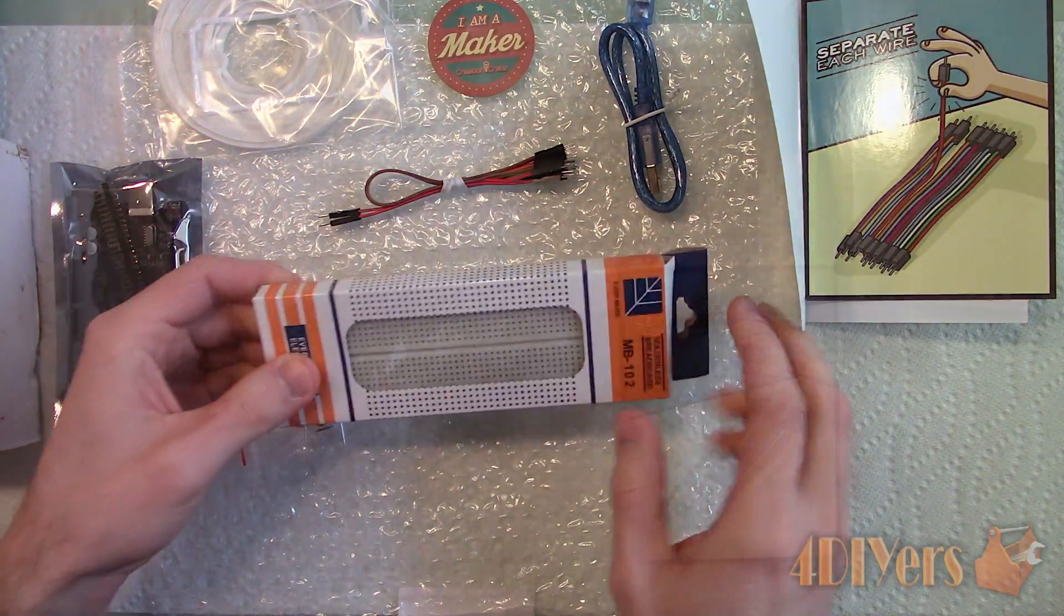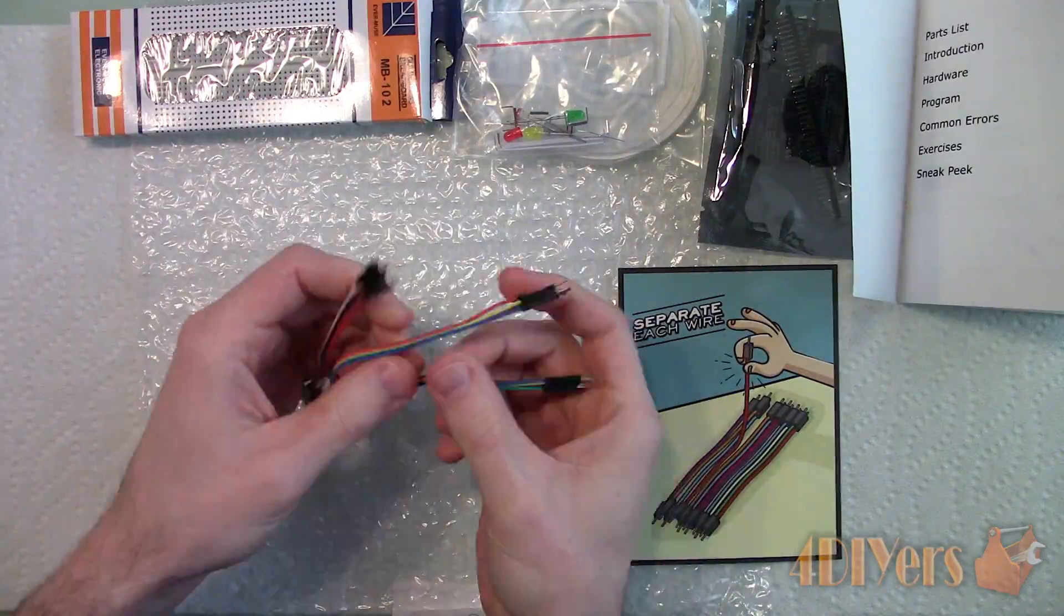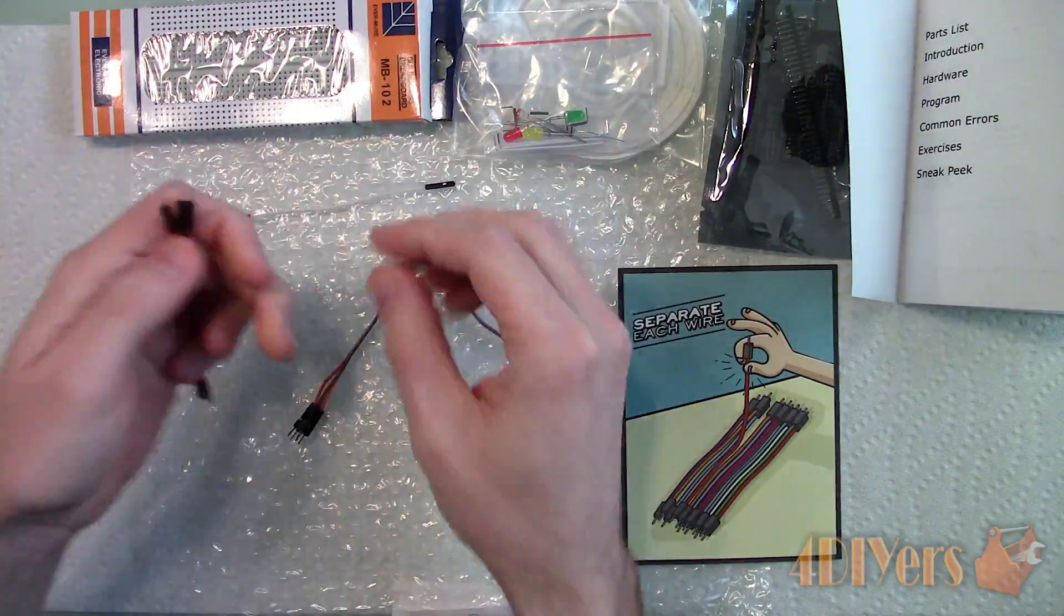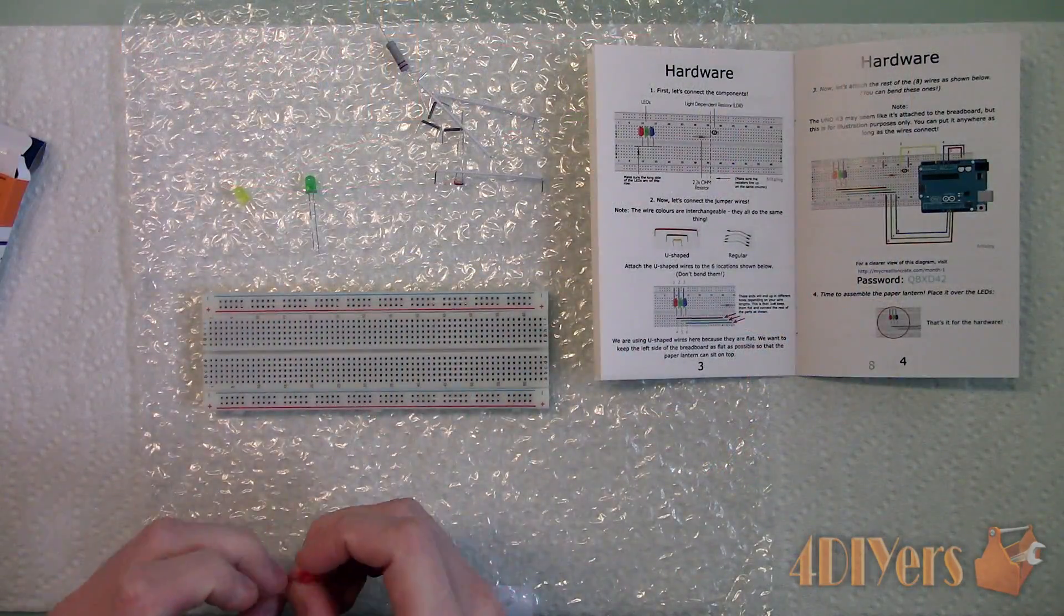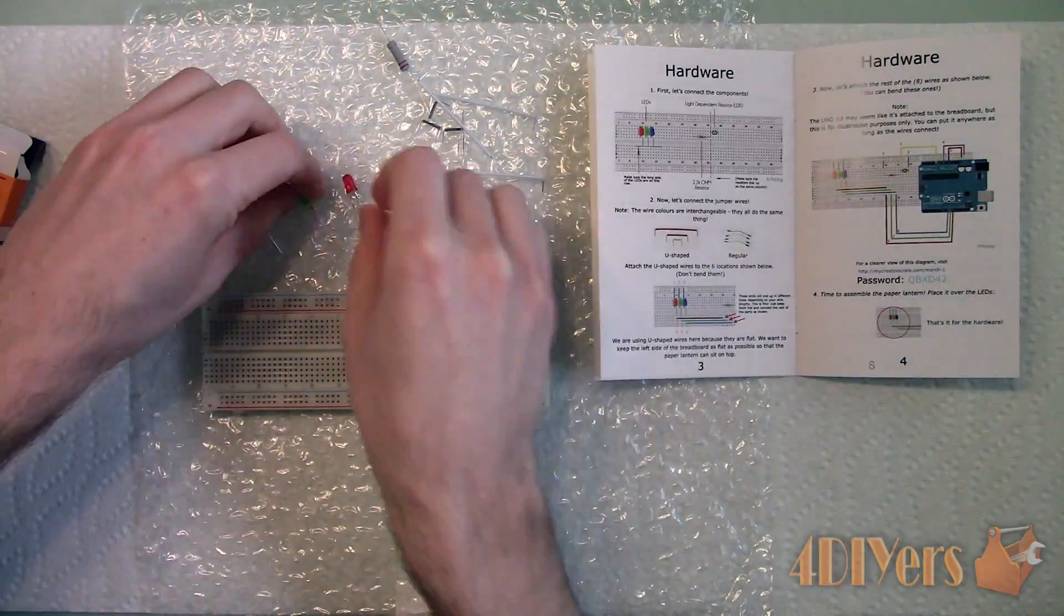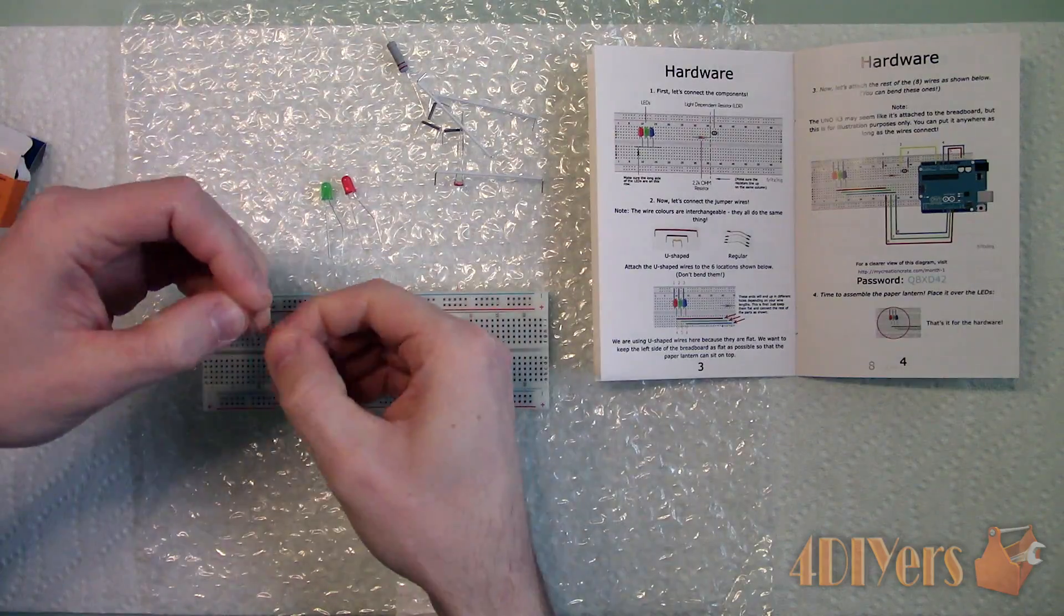Starting with the first step we must separate the molded wires. Just simply pull these apart, no tools are required. Now we can finally build the project. As you can see the instruction booklet is very well illustrated, giving both a description and detailed images.